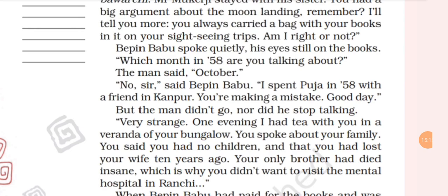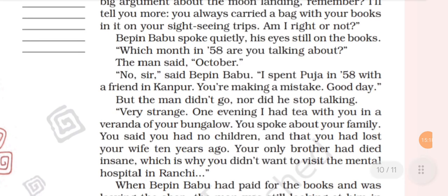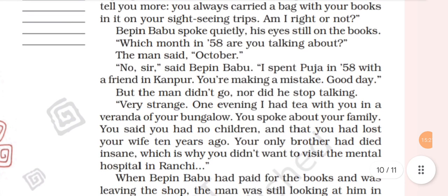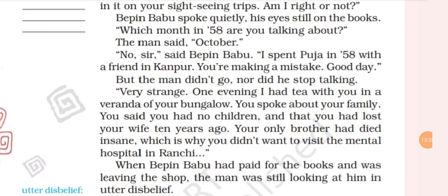'Which month in '58 are you talking about?' asked Vipin Babu. The man said, 'October.' 'No sir,' said Vipin Babu. 'I spent Pooja in '58 with a friend in Kanpur — I was busy with Navratri and Durga Pooja in Kanpur.' Vipin Babu turned to leave, saying, 'You are making a mistake.' But the man did not go — Parimal Ghosh did not stop talking.